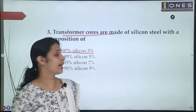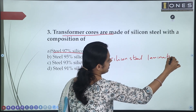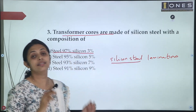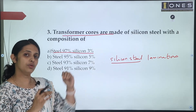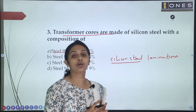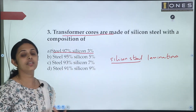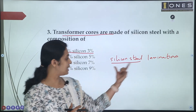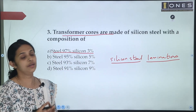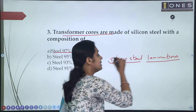If we are using the transformer core, we use silicon steel laminations. We usually use 3 to 5% silicon. Adding silicon reduces hysteresis losses by improving the BH curve. Using laminations reduces eddy current losses. So for transformer cores, silicon steel laminations are used to reduce both hysteresis and eddy current losses.